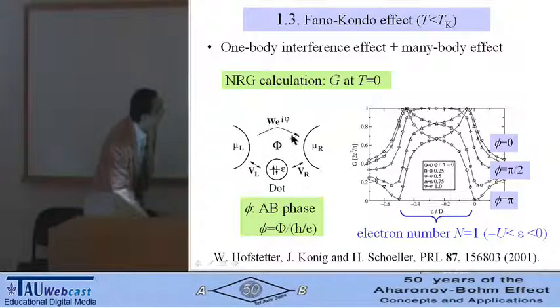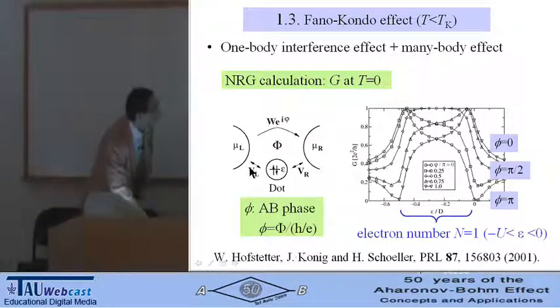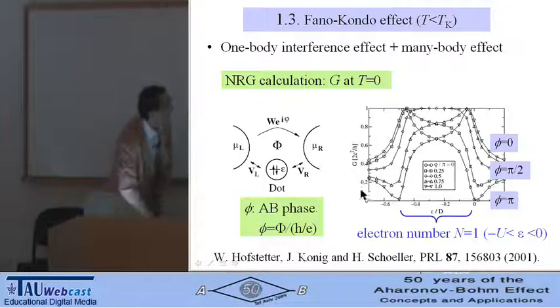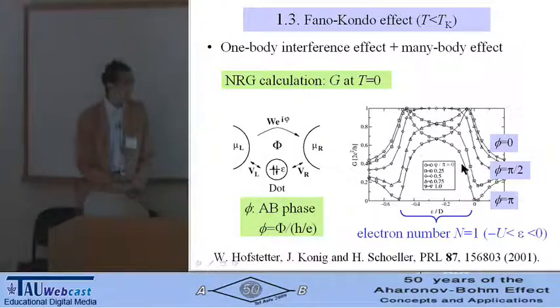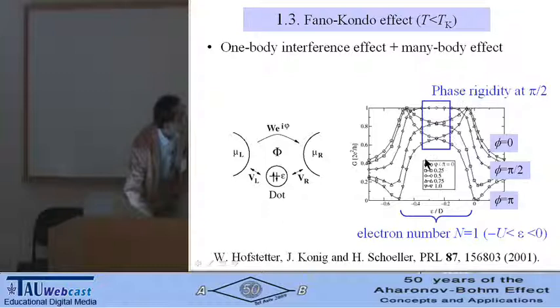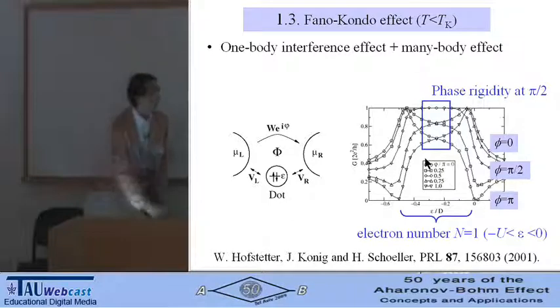Here, phi is the Aharonov-Bohm phase corresponding to the magnetic flux penetrating the ring. Conductance shows a Fano-like shape depending on the magnetic flux inside the quantum dot. But in the Kondo region, reflecting the phase rigidity at half of pi, the change of the conductance becomes slow.